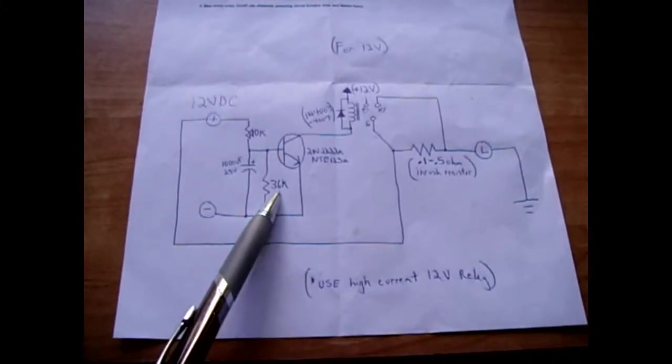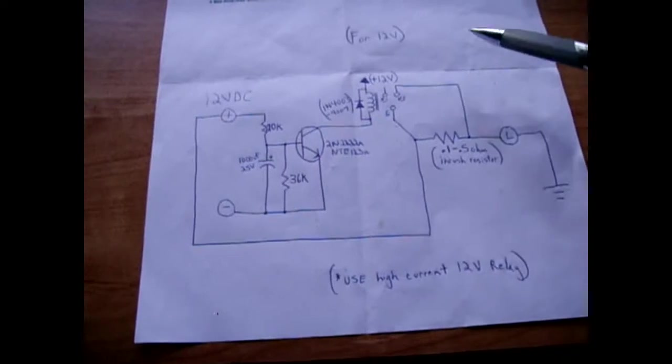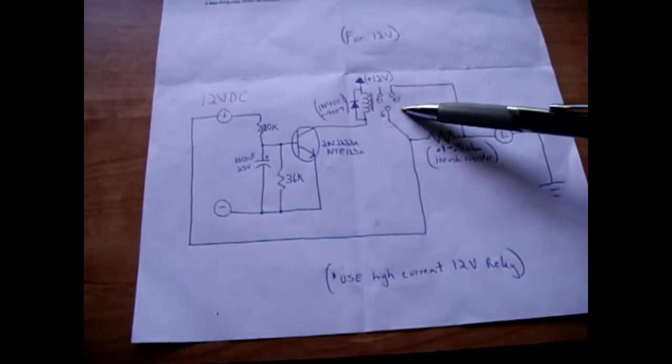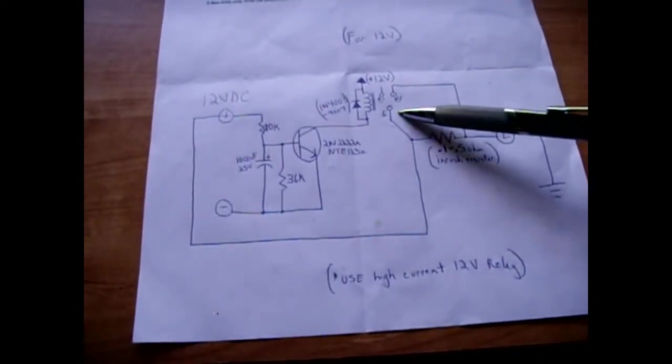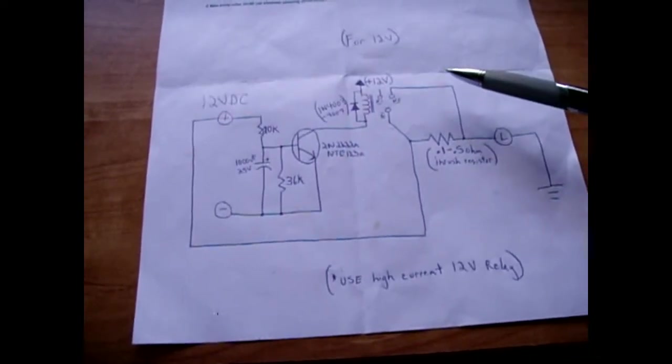You also have in parallel with that capacitor a 36k. The collector ties into a relay and you want to make sure you use a high current relay.